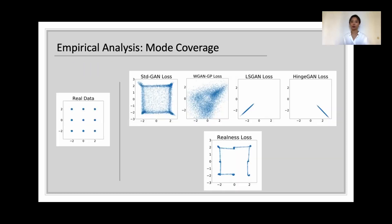Let's start with mode coverage. We compared RealnessGAN with the standard GAN and some of its variations on a 3x3 mixture of Gaussian dataset. From the results, we can see that data modes recovered by RealnessGAN has higher diversity, and the samples are more compact compared to other loss functions.